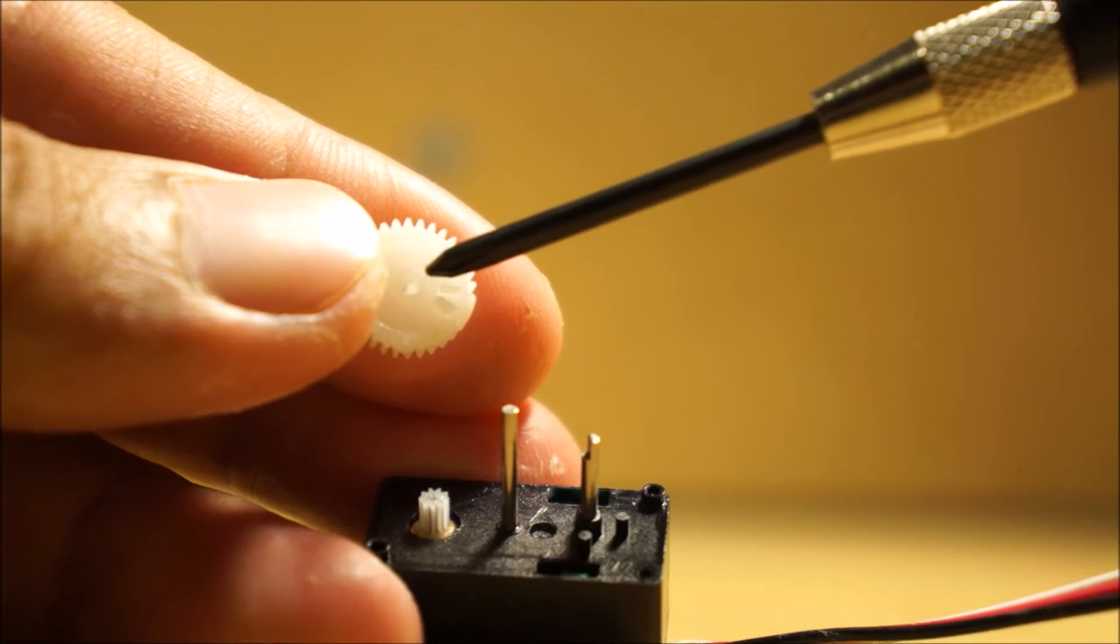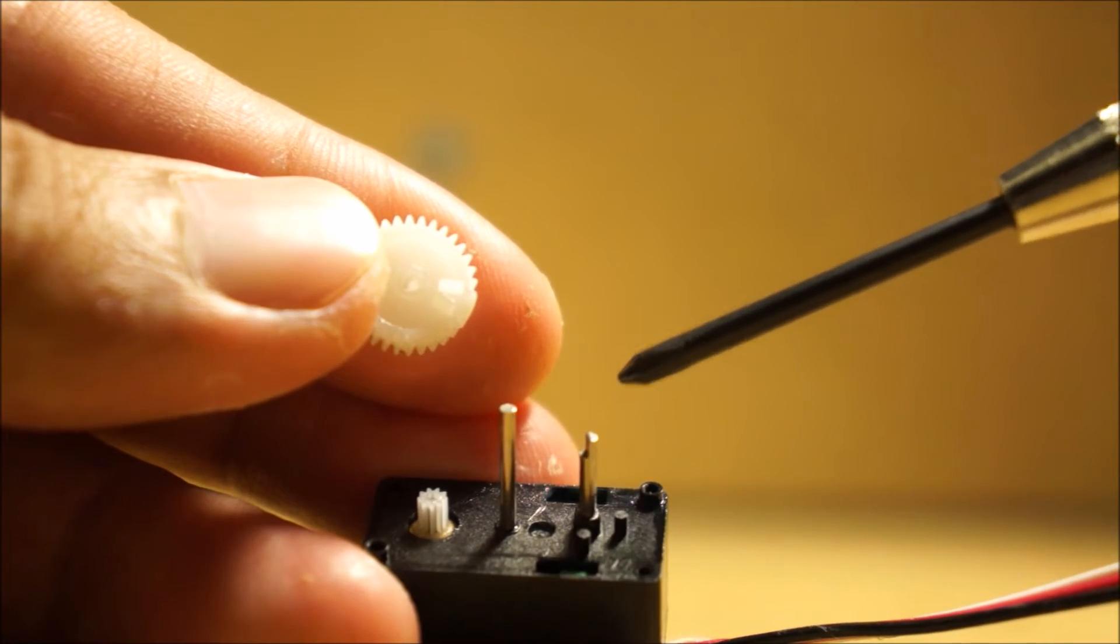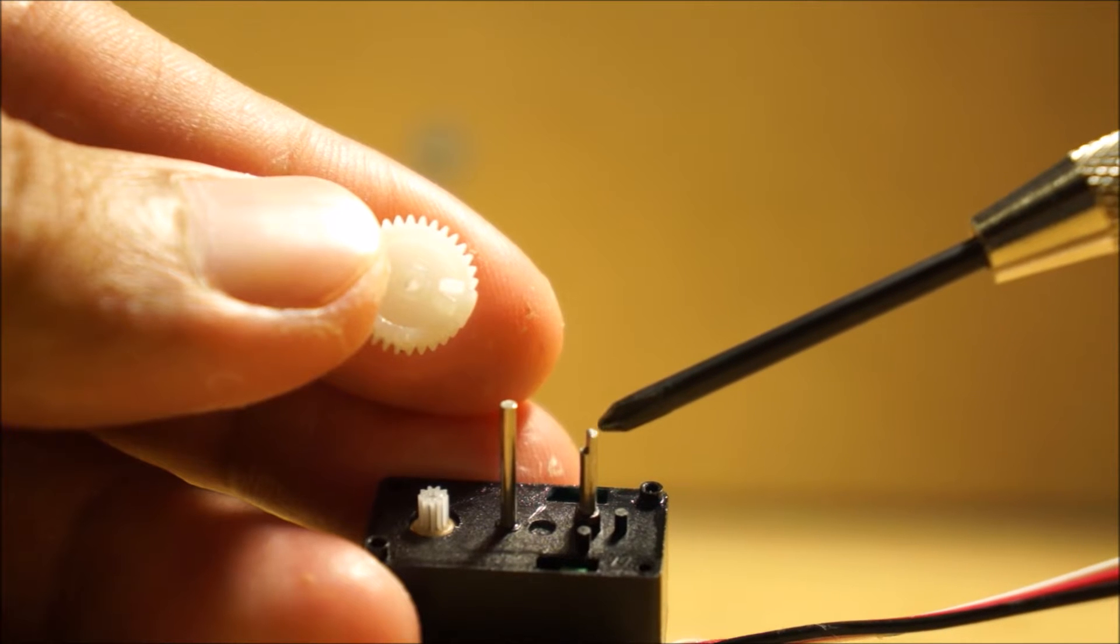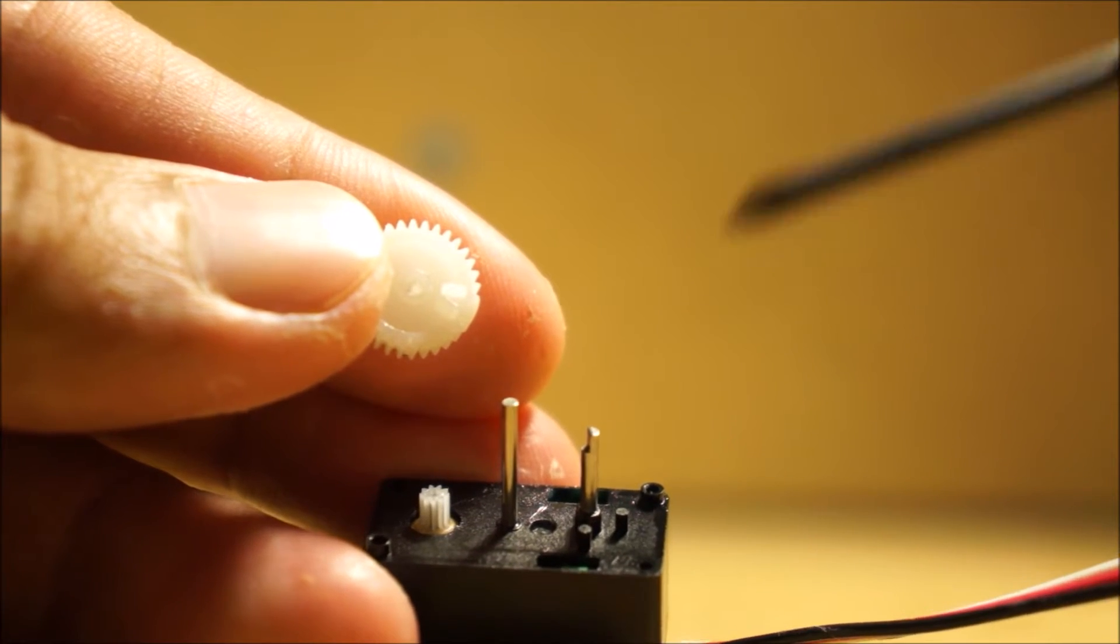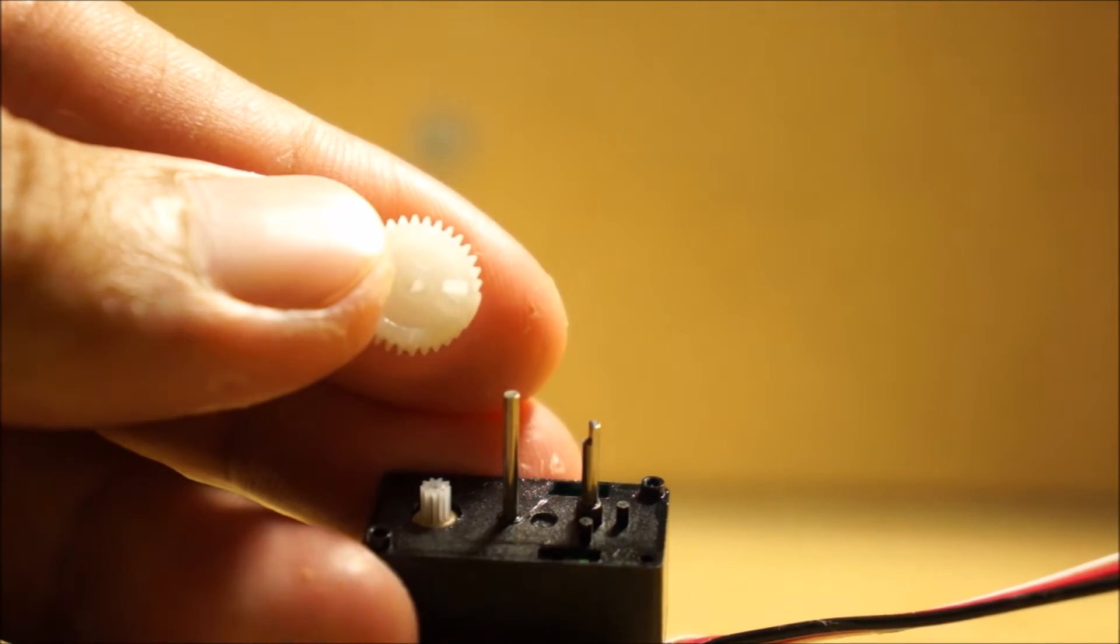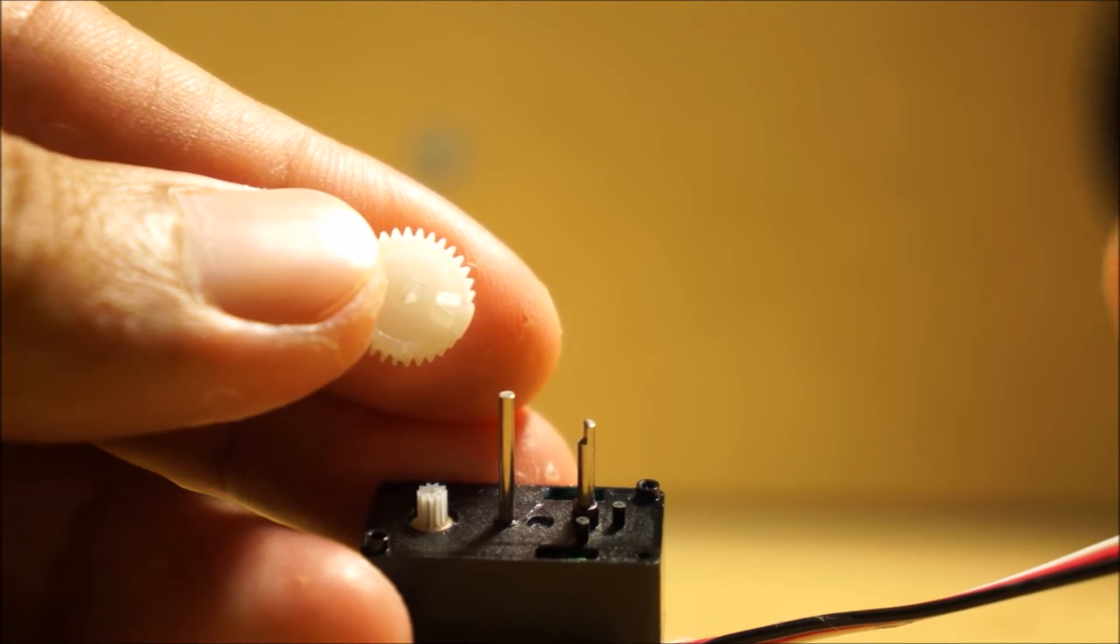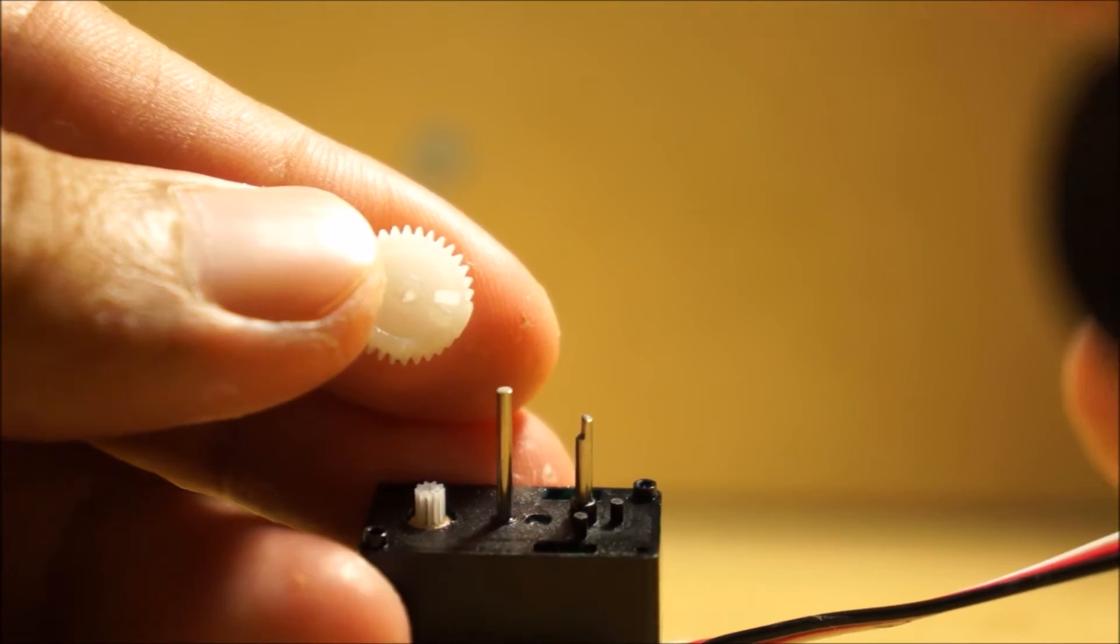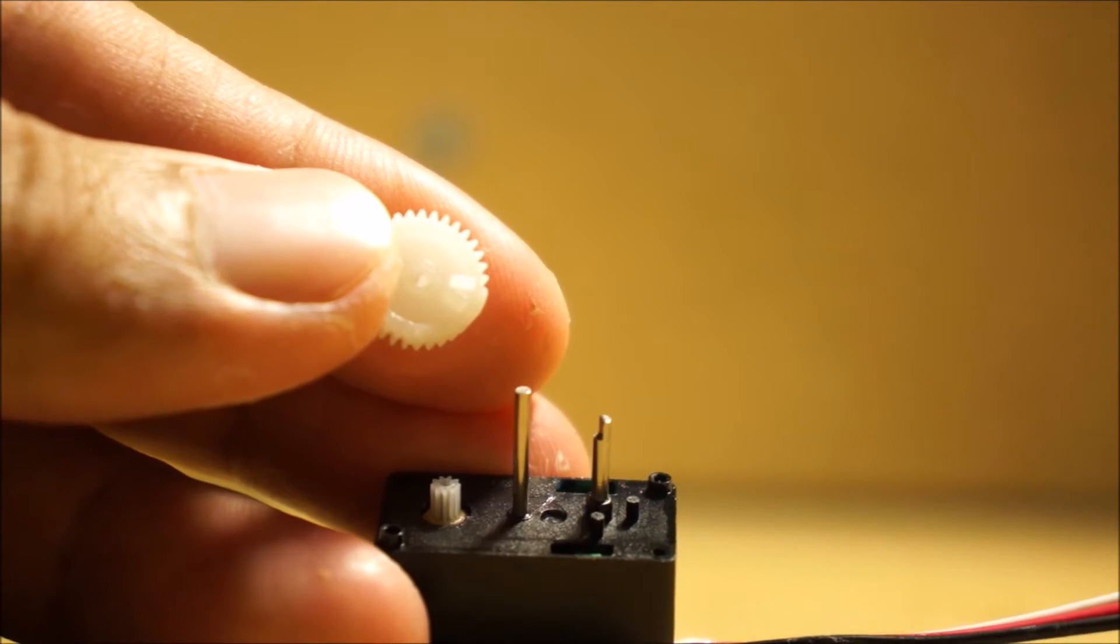Now what you want to do is, there's a hole right here in this main top gear that's notched inside that basically fits on this pin right here. You can also tell that this one is notched and it basically fits together. When this gear rotates that's telling your potentiometer how much it has turned. When it hits a stopping point, that's basically what's stopping the servo from moving any further, the servo arm.